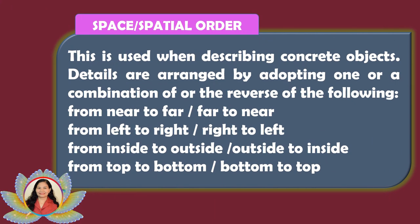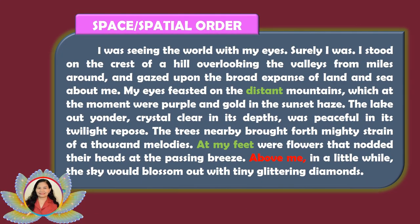The second order of the paragraph is spatial order. Spatial order is a method of organizing information based on physical location or relationship in space. It arranges details according to their position, such as near to far, far to near, left to right, right to left, inside to outside, top to bottom, or any other spatial relationship. Spatial order is commonly used in descriptive writing where the author describes a scene, object, or event in a logical order based on spatial relationships, helping the reader visualize more clearly.